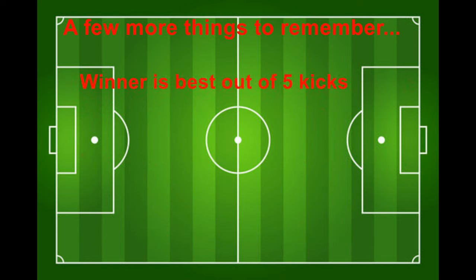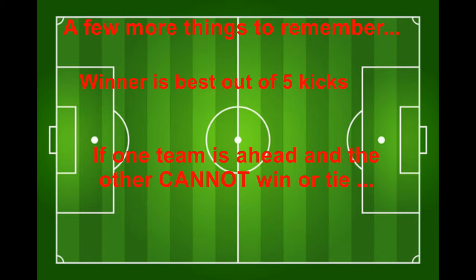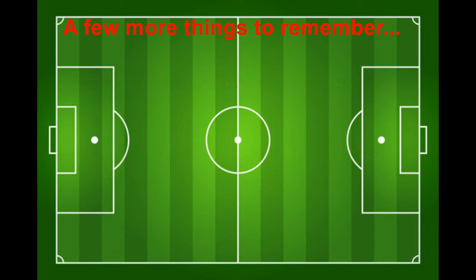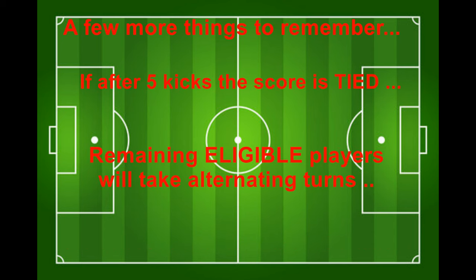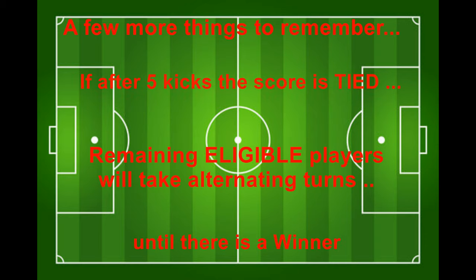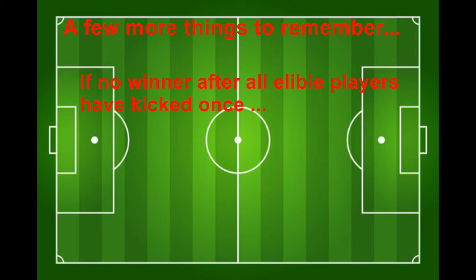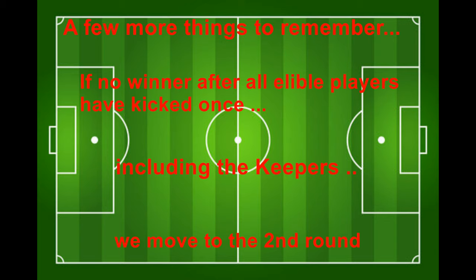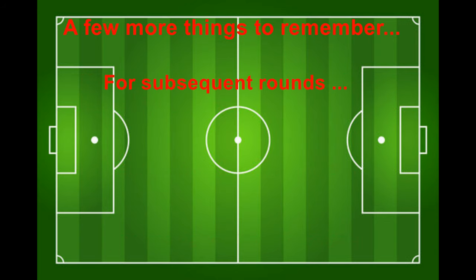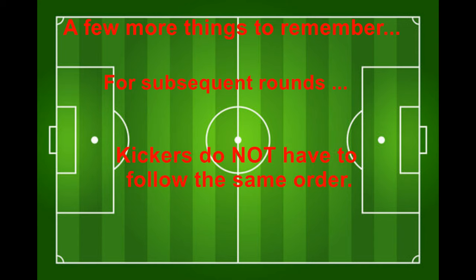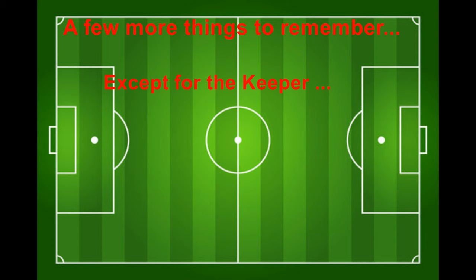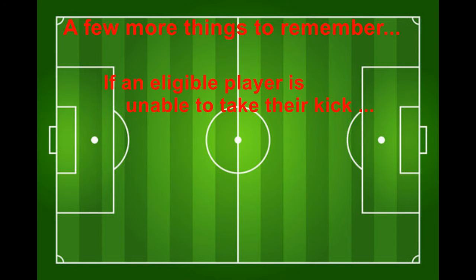The winner is decided by the best out of five kicks. If one team is ahead before the fifth kick and the other team cannot win, the subsequent kicks are not taken. If after five kicks the score is tied, the remaining eligible players will take alternating turns until there is a winner. Once all eligible players have kicked once — and that includes the keepers — the process continues with players taking a second round of kicks. For subsequent rounds, teams do not have to follow the same order as previous rounds. Except for a keeper, no players may be substituted. If an eligible player is unable to take their kick, that counts as a miss.